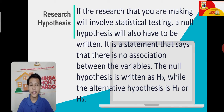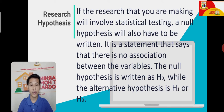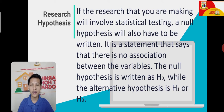If the research you are making will involve statistical testing, a null hypothesis will also have to be written. It is a statement that says there is no association between the variables. The null hypothesis is written as H-sub-O, while the alternative hypothesis is H-sub-1 or H-sub-A.